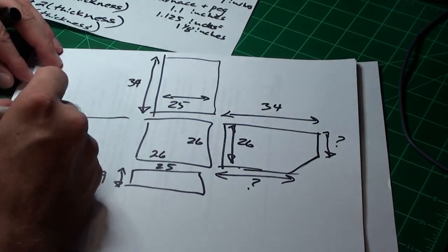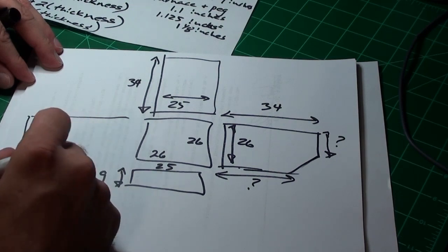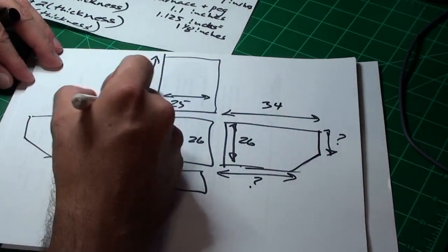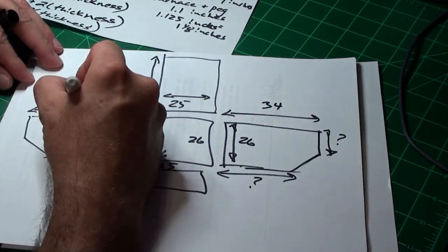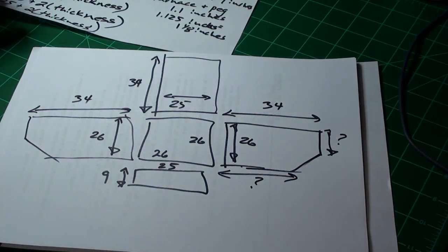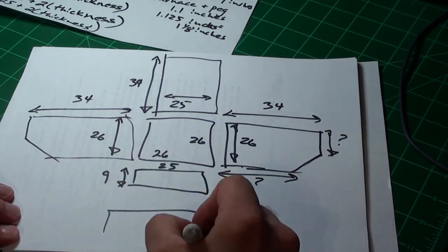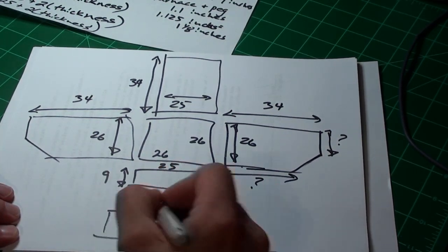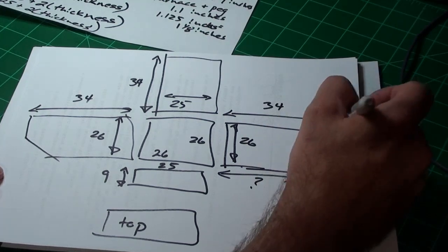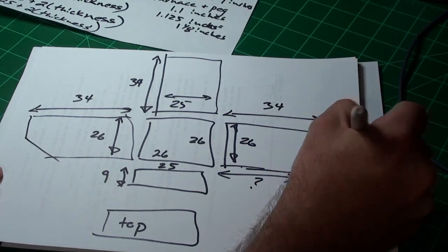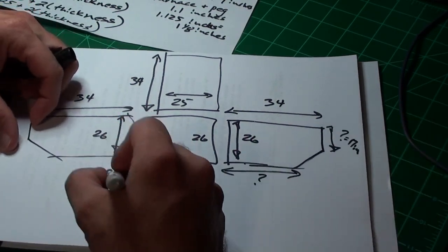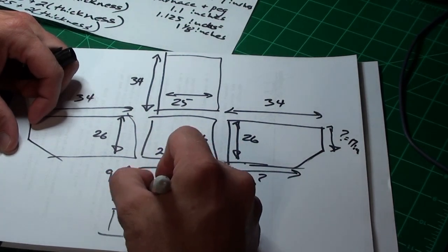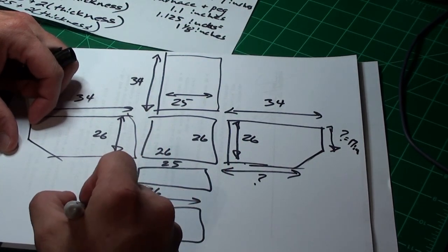This side mirrors the other side with dimensions of 26 inches and 34 inches. The top ended up being 17 inches wide, which was wide enough to support the lighting kit I bought. So the top is 26 inches by 17 inches.